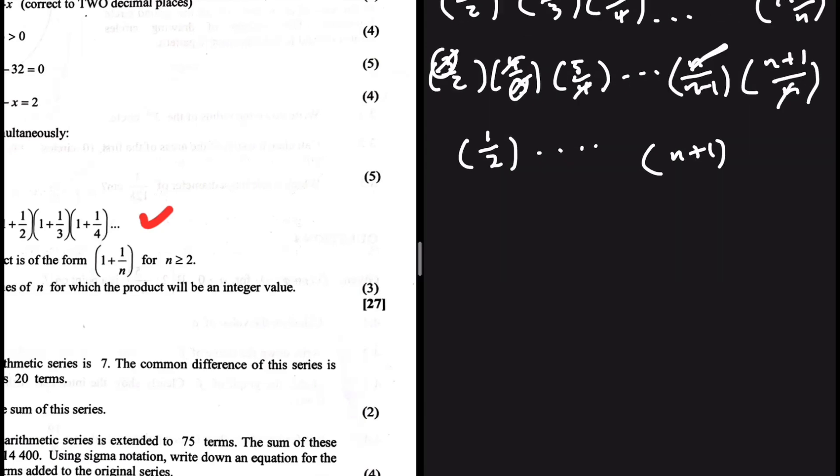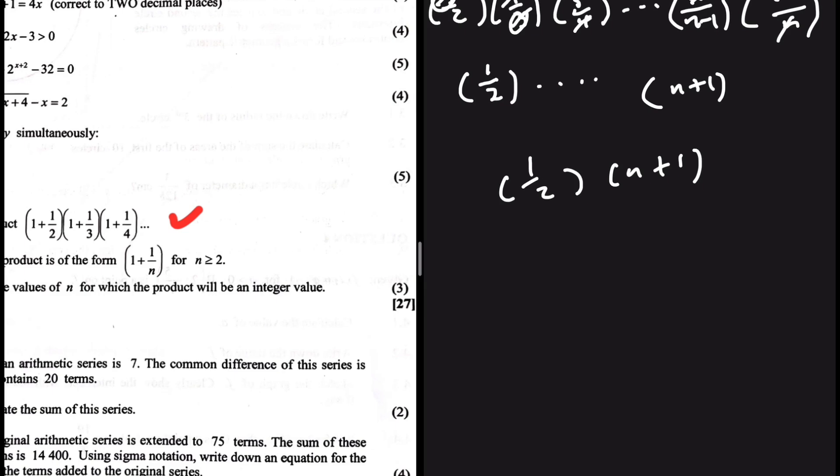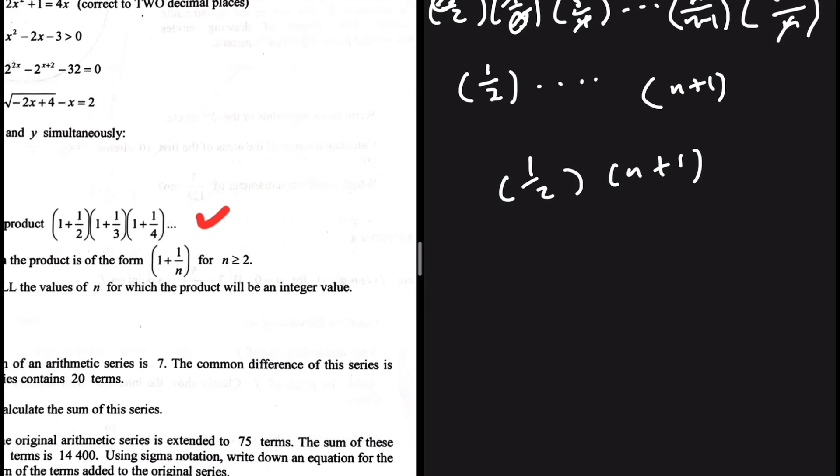1 over 2 and n plus 1. Let's see how they behave. We want the product to be an integer. An integer is a number that is not a fraction. It's a whole number. So when can these be whole? When can we multiply these two things and have a whole number? It's when n plus 1 is even.